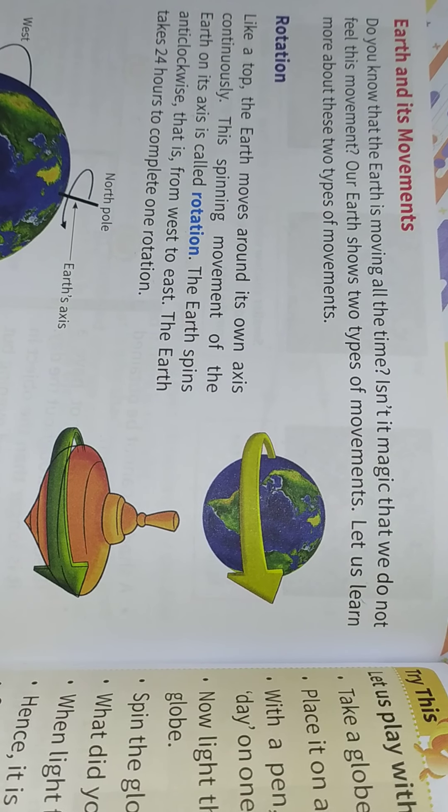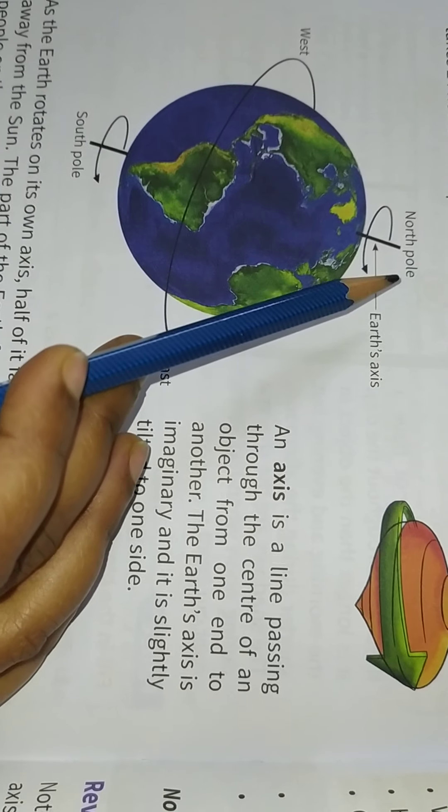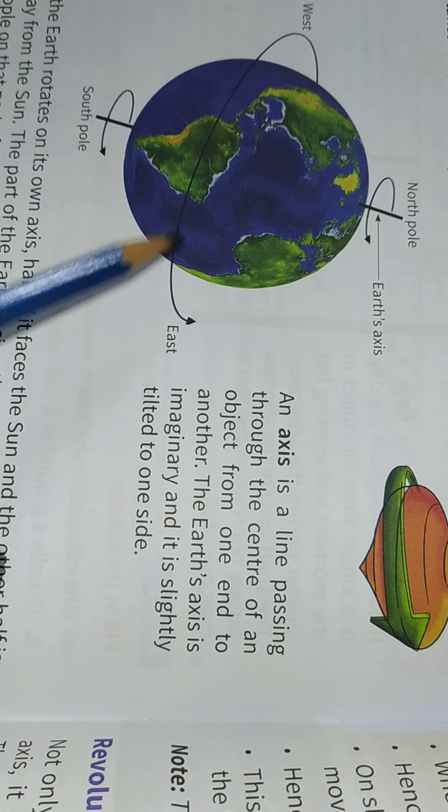The Earth moves around its own axis, it takes 24 hours to complete one rotation.